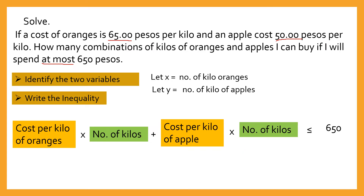So now, since we know that the cost is 65 for oranges, let's put 65 here, and then the number of kilos is x.